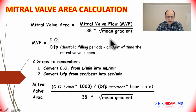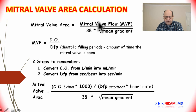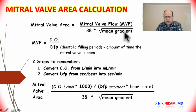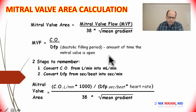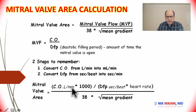Going back to the formula: mitral valve area is calculated based on mitral valve flow divided by 38 times the square root of the mean gradient, where 38 is a constant. The diastolic filling time multiplied by heart rate gives us the diastolic filling period. The cardiac output has to be converted into milliliters by multiplying it by 1000.